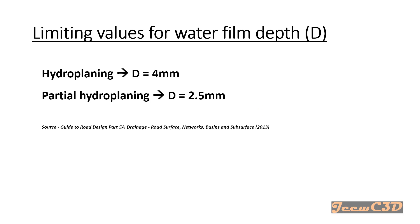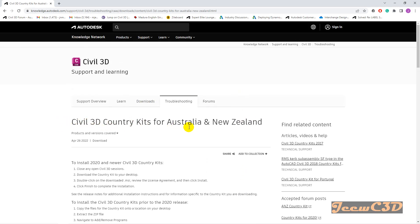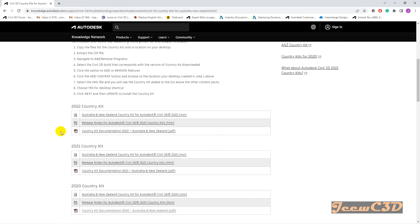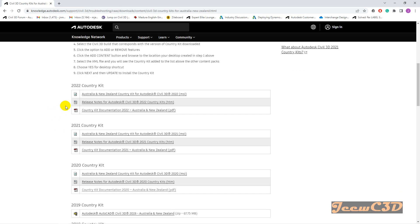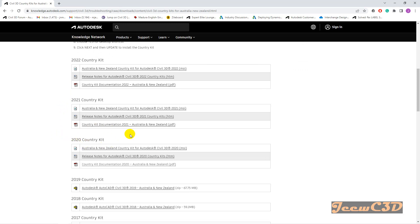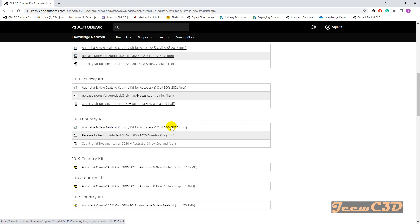Before going to Civil 3D, we need to know that the Civil 3D country kit for Australia and New Zealand includes this add-on, called DRIP, for aqua planning analysis. You have to install the Australia and New Zealand country kit in your Civil 3D version. You need to download the correct country kit version — available up to 2022. In this case we will run the 2020 version. Download the MSI file and install it.